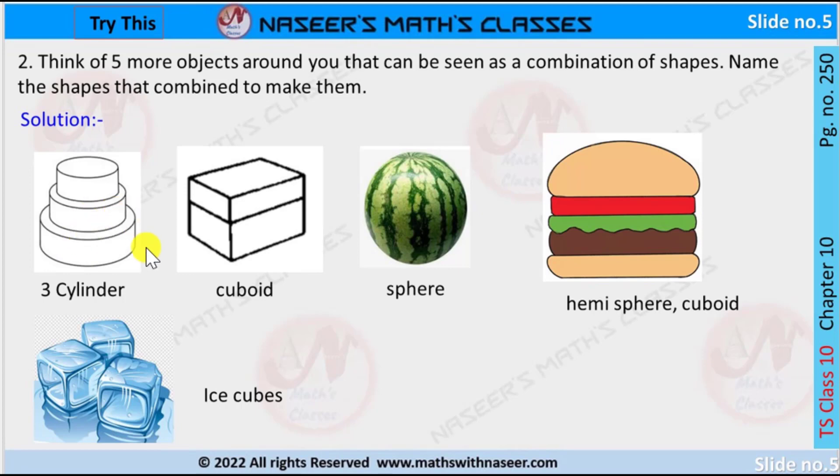This is a box, it is a combination of cuboids. And this is a watermelon, it is a sphere shape. This is a burger, which is top hemisphere and others are in the shape of cuboids.